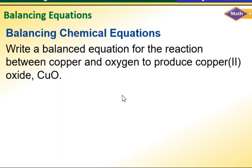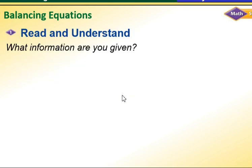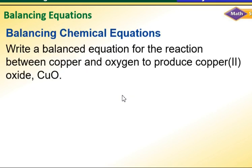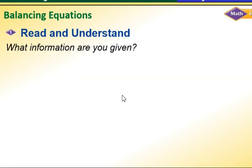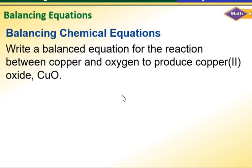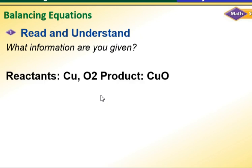Now we're going to talk in detail. For example, write a balanced equation for the reaction between copper and oxygen to produce copper oxide. What I have to understand: what is the given information? My given information is that I have two reactants together: copper and oxygen. The product is copper oxide.